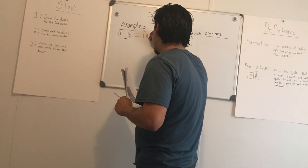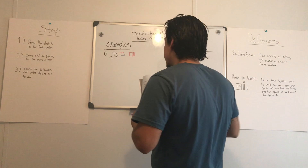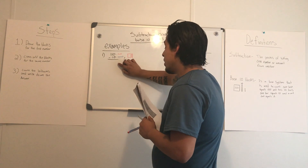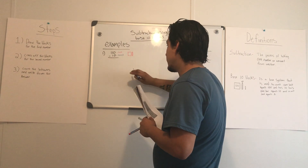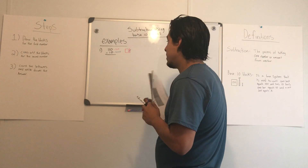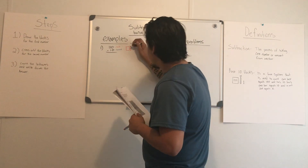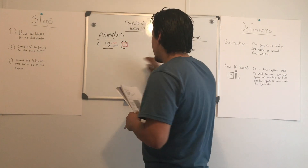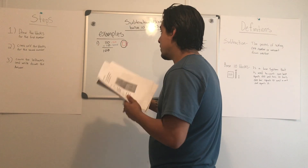So for the first step, we know that there are 100 units and one 10, and we also know that there is a 10. We write that down using the block and the 10 bar. For the second step, you want to cross off the blocks for the second number. We know there's a 10 in the second number, so you cross that one out. For the third and final step, you count the leftovers and write down the answer. There is one block left over and that block means 100. And that's how you get the answer for the first example.